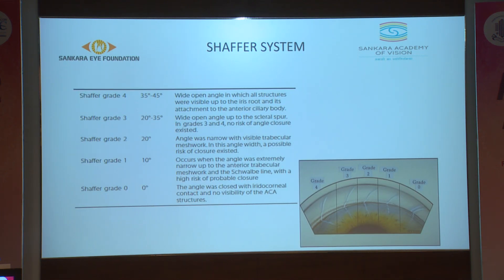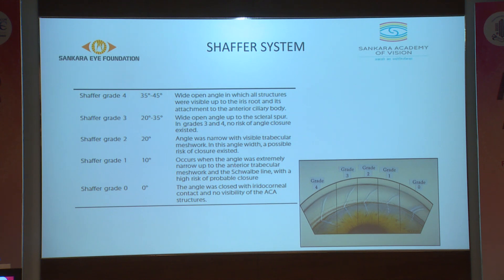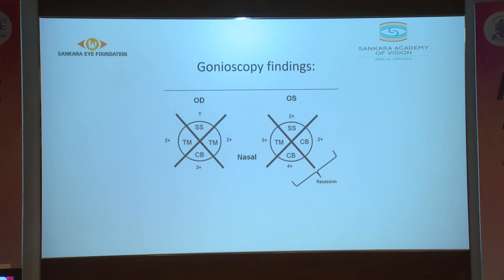In Schaefer's system, grade 4 is 35 to 45 degrees of angle recess with all structures visible to the root of the iris. Grade 3 is 20 to 35 degrees — wide open angle up to scleral spur. Grade 2 is 20 degrees — narrow angle with visible trabecular meshwork. Grade 1 is 10 degrees — extremely narrow angle. Grade 0 is when no angle structures are visible. Clinically, findings are noted in the form of a cross indicating what structures are seen, and on indentation, if the angle opens further, an arrow is placed with the newly visible structures noted.